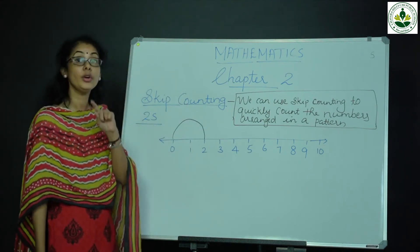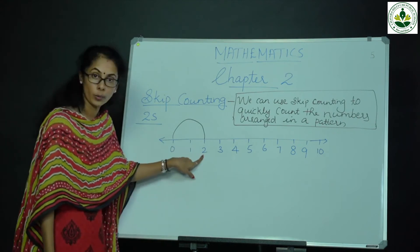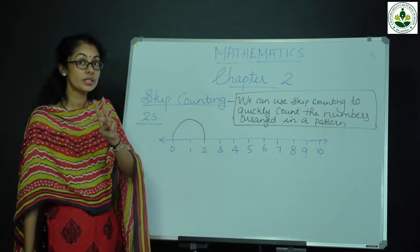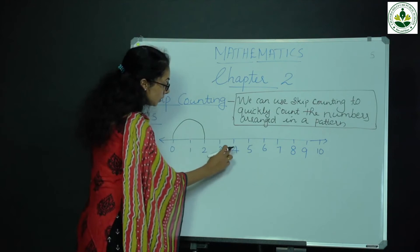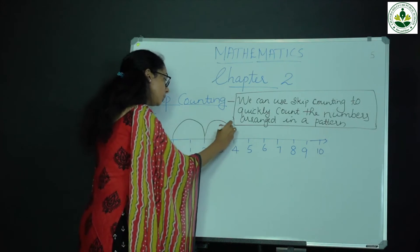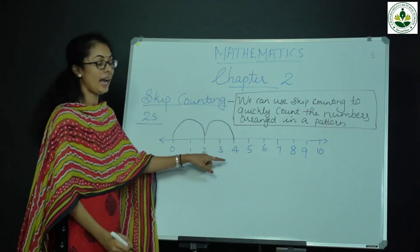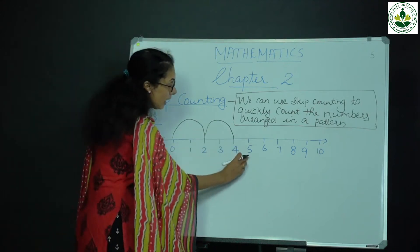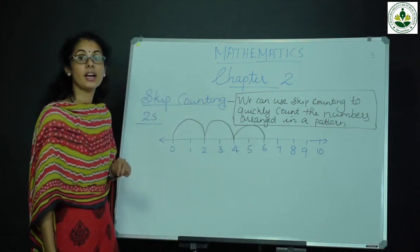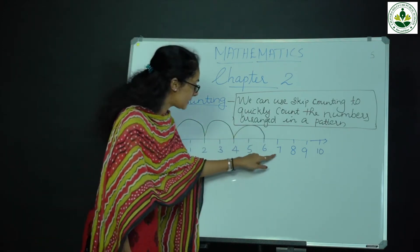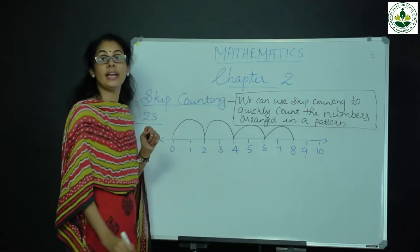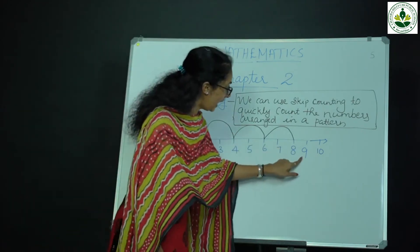Starting from 0, count two times: 1, 2. Then again count two times: 1, 2 — so 2 to 4. Then again two times: 5, 6 — so 4 to 6. Then count again two times: 7, 8. Then count again two times: 9, 10.